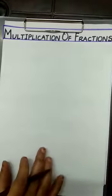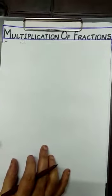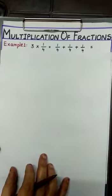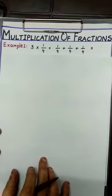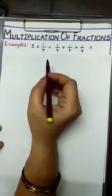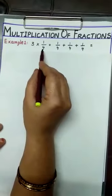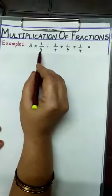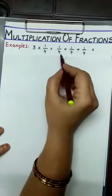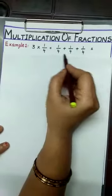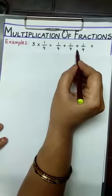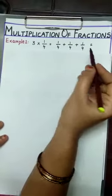When we multiply whole numbers, we know we are repeatedly adding a number. Similarly, in fractions, when we multiply a whole number by a fraction — for example, 3 into 1/4 — it means adding 1/4 three times: 1/4 plus 1/4 plus 1/4.